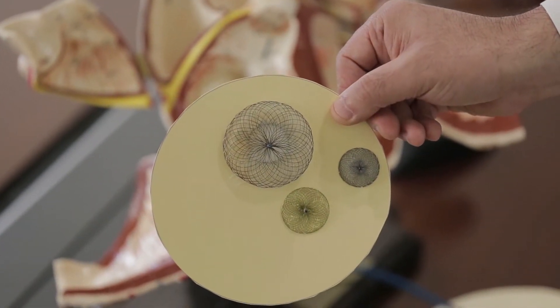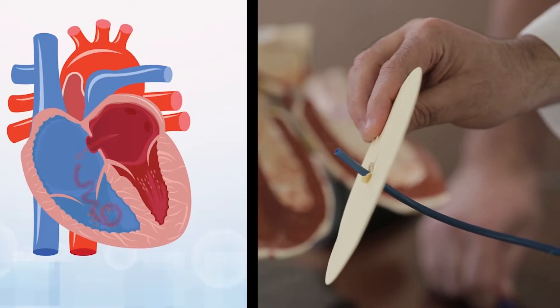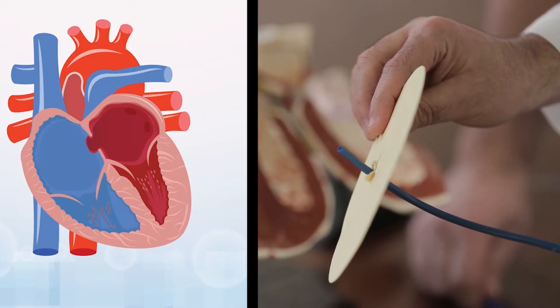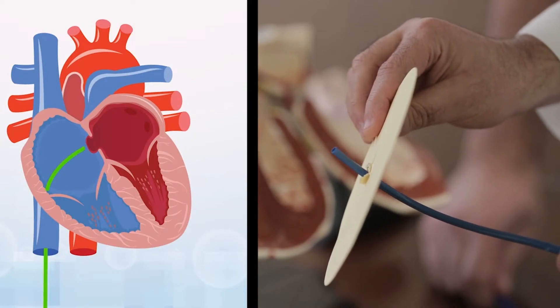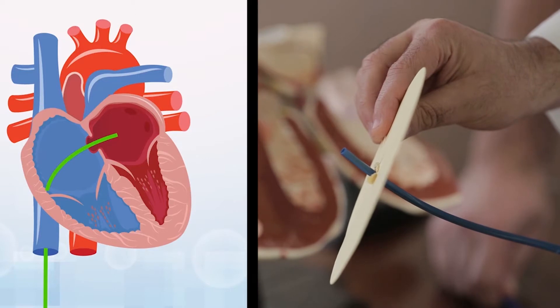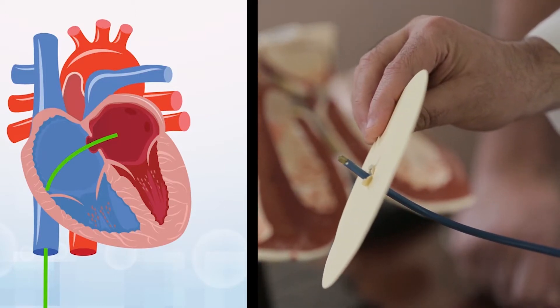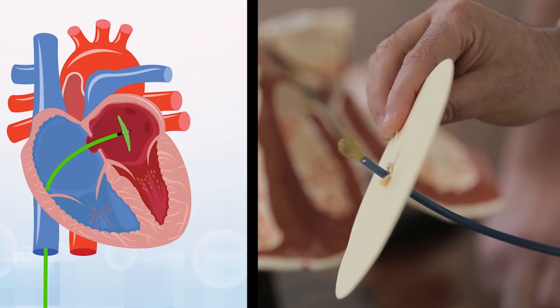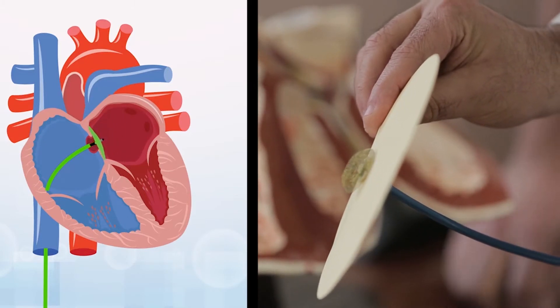The patient left the hospital the next day in an excellent condition and will have a normal life. Through the groin area, we introduced a special catheter into the heart. We advanced the catheter across the hole and then we delivered the first arm of the device in the left upper chamber.